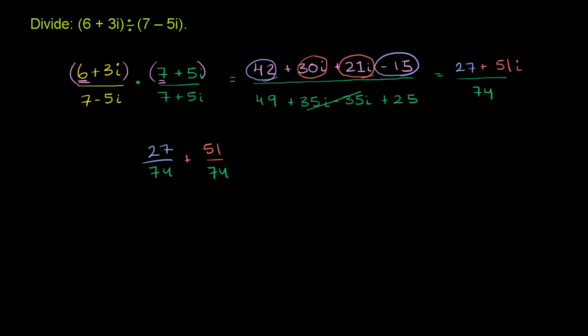And we are done. We have a real part and we have an imaginary part. If this last step confuses you, just remember we're essentially multiplying both terms times 1 over 74. We're dividing both terms by 74, distributing the 1 over 74 times both of these. And that's how we got this result. We have a nice real part and a nice imaginary part.